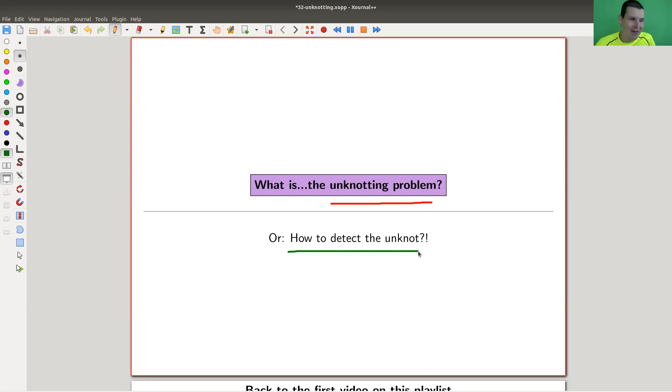It's really just this question: can we detect the unknot? It's a very simple question. Here's the unknot, but the unknot might have really complicated diagrams, and can we detect it if we have some kind of random knotty picture?